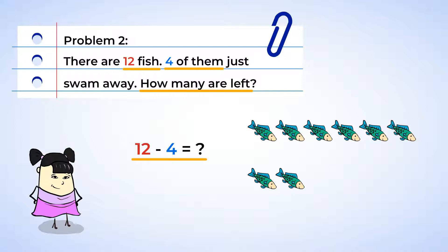We can find the answer by counting how many fish are left in the river. One, two, three, four, five, six, seven, eight. Now we can replace the question mark with the number eight. And the final subtraction sentence is twelve minus four equals eight. Well done.